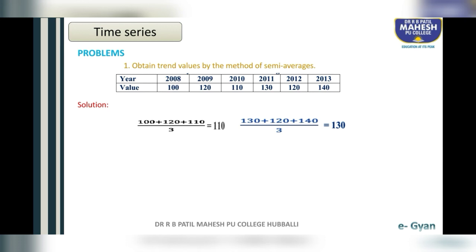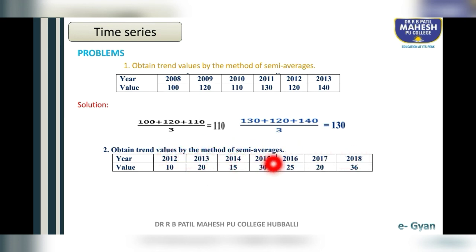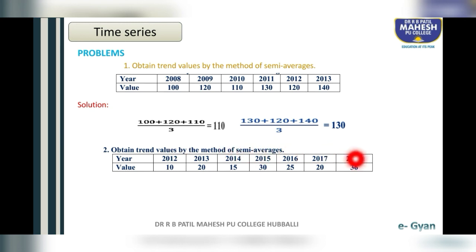Let us take the second example on semi-averages. Obtain trend values by the method of semi-averages. The year is from 2012 to 2018, and the values are 10, 20, 15, 30, 25, 20, and 36. First, count the values — there are seven values here.